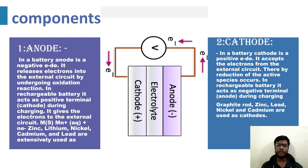Cathode: In a battery, the cathode is a positive electrode. It accepts electrons from the external circuit, whereby reduction of the active species occurs. In a rechargeable battery, it acts as a negative terminal during charging.